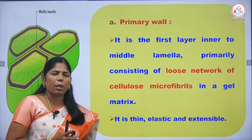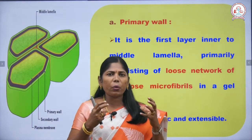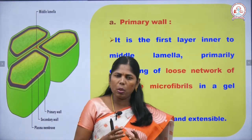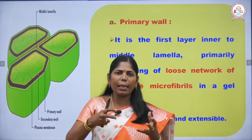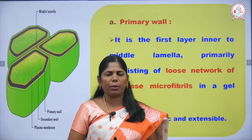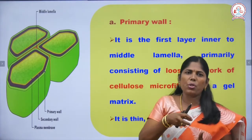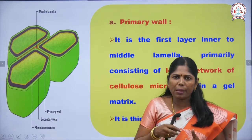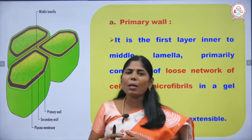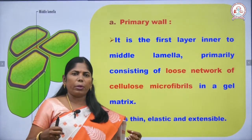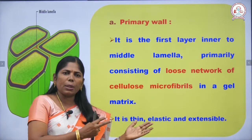The primary wall is made up of cellulose with some fibers, and the microfibrils are bounded in a gel-like substance called the matrix. The microfibrils are loosely arranged in the matrix, which is a fluid-like substance. The primary wall is very thin, elastic, and extensible — just the opposite of the secondary wall.